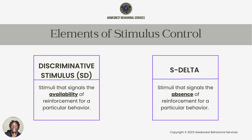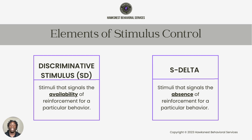Some discriminative stimuli examples are the McDonald's sign or the red light at Krispy Kreme donuts. Some S-deltas may be red lights on traffic lights, police lights, or police sirens. Those stop signs and red lights would be considered S-deltas because they're signaling to you that there's no reinforcement available in that moment, as opposed to discriminative stimuli, which signal that some type of reinforcement is available.